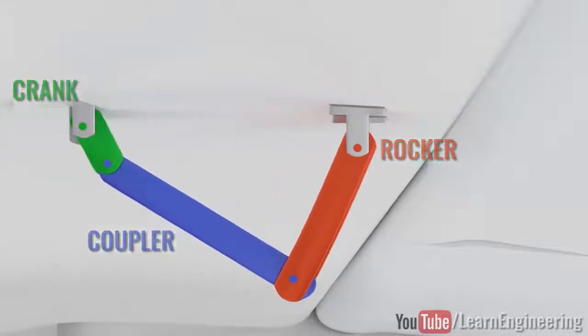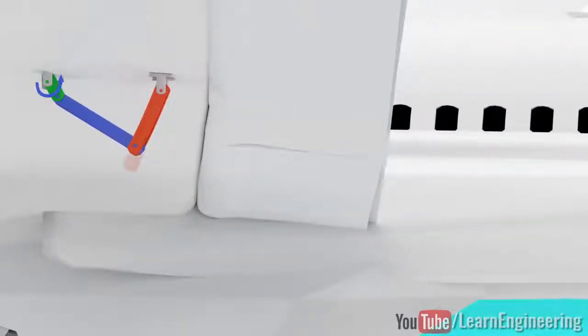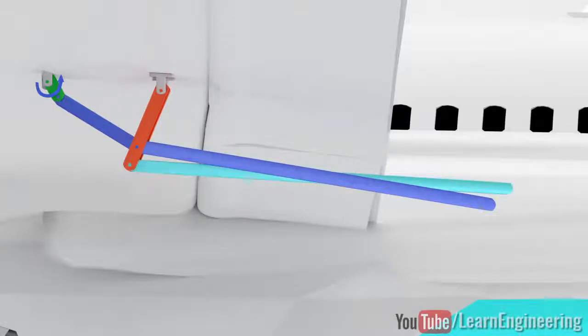Let's modify this mechanism to achieve the desired motion. First, the length of the rocker arm is increased. The length of the coupler is also increased. One more link is connected to the end of the rocker arm. A final limb is connected between these arms.